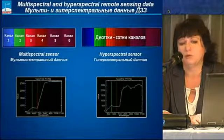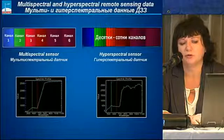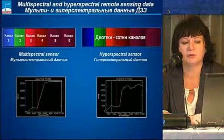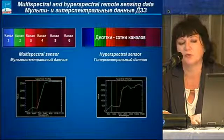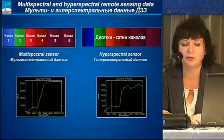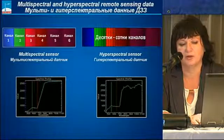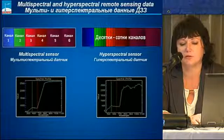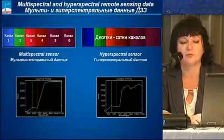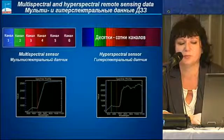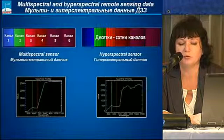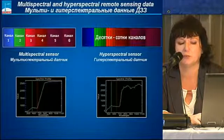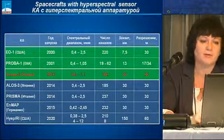A few words about the terminology. Multi-spectral sensors are those that have several channels. Hyperspectral sensors operate in several tens or hundreds of narrower channels with a width of 50 nanometers. The hyperspectral signature is the key term — that is the ratio of reflectivity of an object to the wavelength. You can see images obtained with multi-spectral equipment and hyperspectrum, and here we can see major differences between these two.